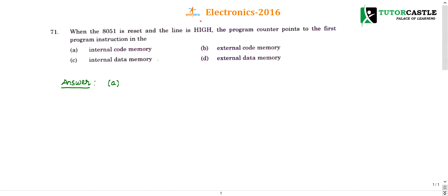Question number 71: When the 8051 is reset, it is clearly given that 8051 is reset and the line is high. So the program counter points to the first program instruction. Where will it point when it is reset and high?